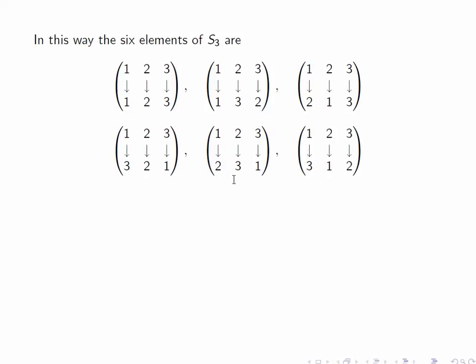This one rotates cyclically the elements 1, 2, 3. So it sends 1 to 2, 2 to 3, and 3 to 1. We call such an element a 3-cycle. The last element rotates them cyclically in the reverse direction, sending 1 to 3, 3 to 2, and 2 to 1.